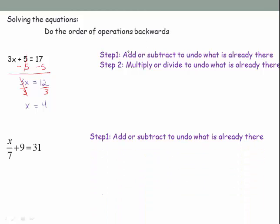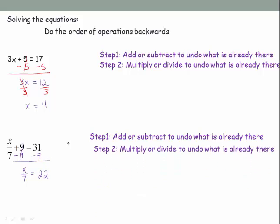For x over 7 plus 9 equals 31: first subtract 9 from both sides — the 9's cancel — leaving x over 7 equals 22. Then multiply both sides by 7 — those 7's cancel — and x equals 154.